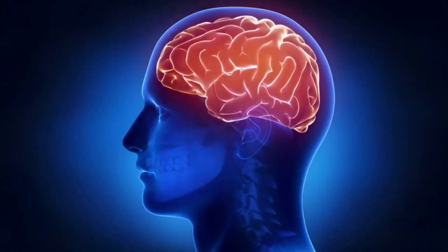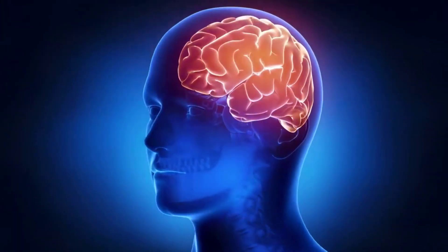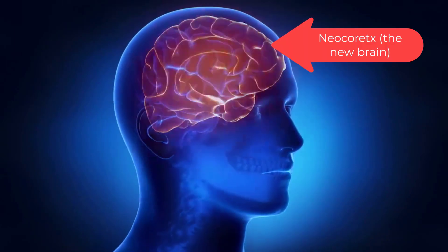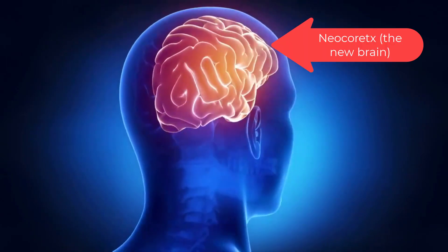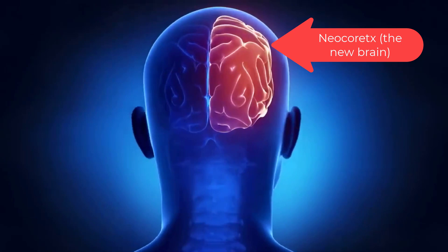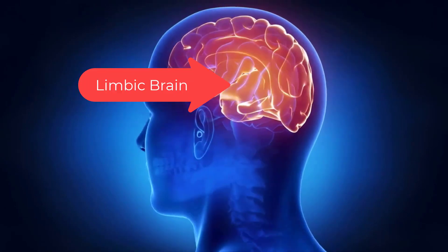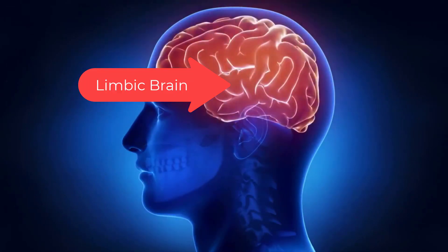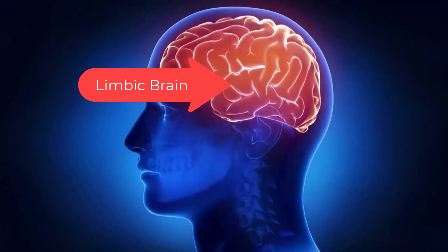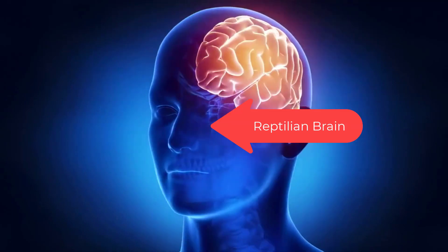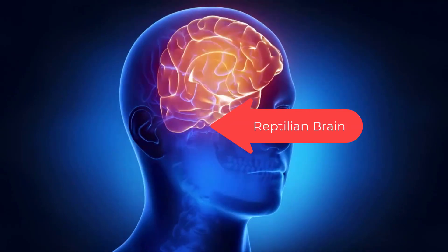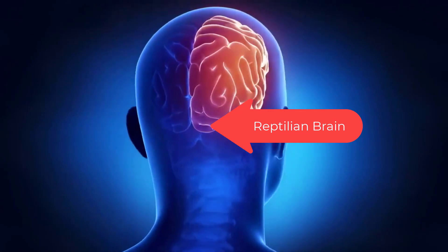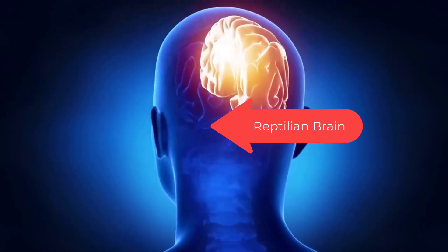Your brain has three basic layers and only one real decision maker. The new brain, the neocortex, thinks and processes rational data. The middle brain, the limbic brain, feels emotions and is our instinct — the fight-or-flight response. The old brain, the reptilian brain, decides.